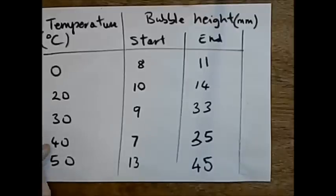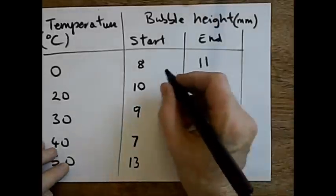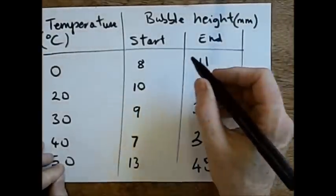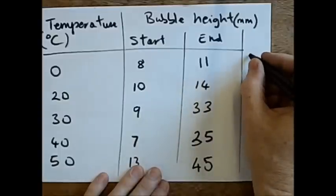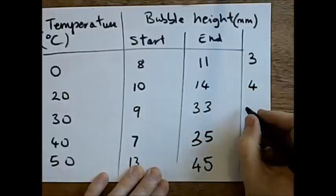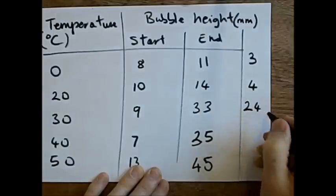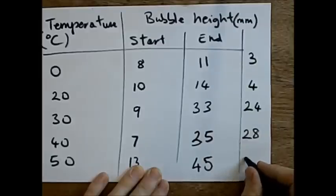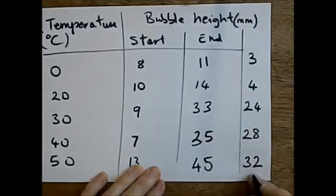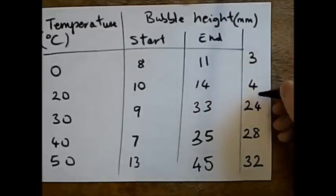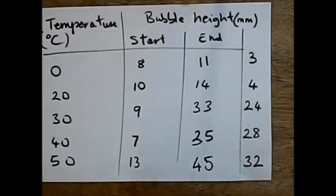We can calculate the results by taking away the starting bubble height from the end bubble height. So we'll have 3, 4, 24, 28, and 32 millimeters. Then you need to plot these numbers against the temperatures.